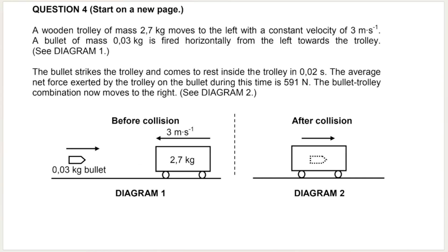A wooden trolley, with the given mass, moves to the left with a constant velocity of three meters per second. They give you the mass of the bullet, which is fired horizontally from the left of the trolley, as you can see on the picture, and it's moving towards the trolley. So the trolley is initially moving to the left, the bullet is initially moving to the right. The bullet strikes and hits the trolley, and the bullet is going to come to rest inside the trolley.